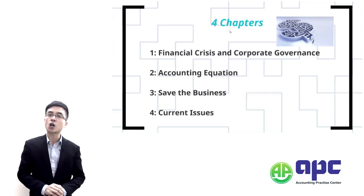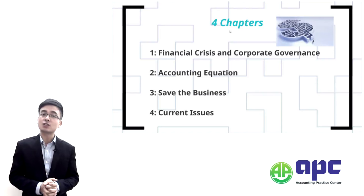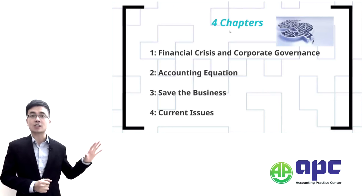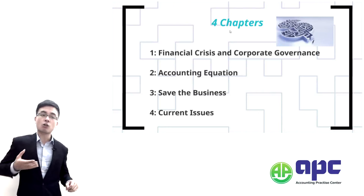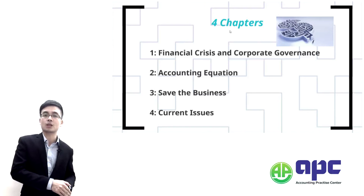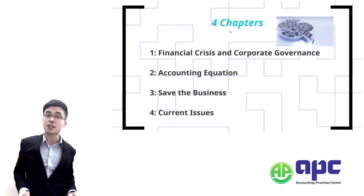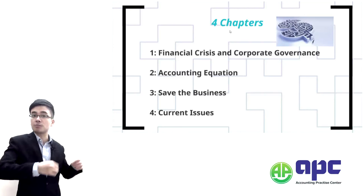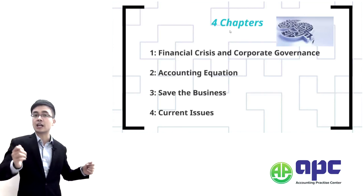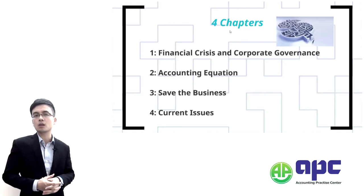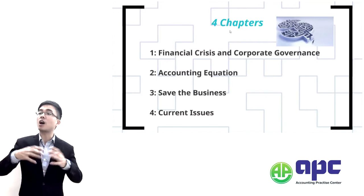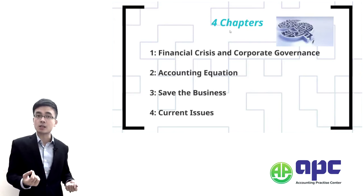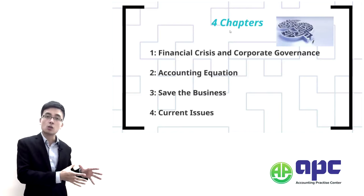The first chapter, we are going to explain the financial crisis that happened in 2008. In 2008, the USA government pumped quite a lot of money into the financial system. Because the financial system had lots of money, the banks started lending money to lots of people to earn capital gain or interest, irrespective of whether their credit status was strong or weak.